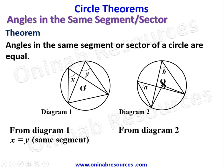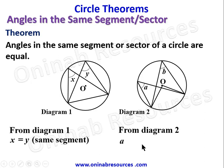From diagram two, we have the center of the circle and a sector. This is the minor sector and this is the major sector. For any angle to be in the same sector of the circle, the lines containing the angles must both originate from both ends of the arc forming the sector. The lines containing angle a and angle b both originate from the two ends of the arc, so a is equal to b, being angles in the same sector of the circle.